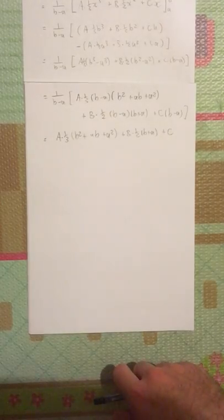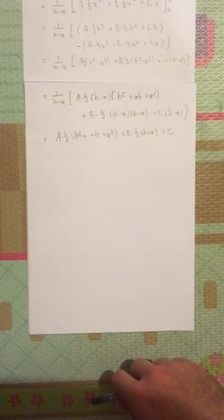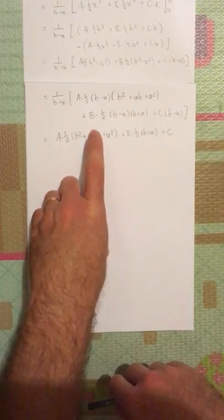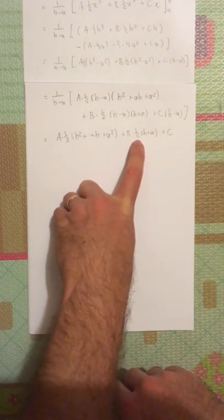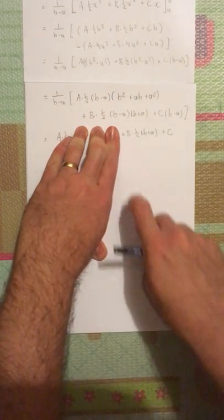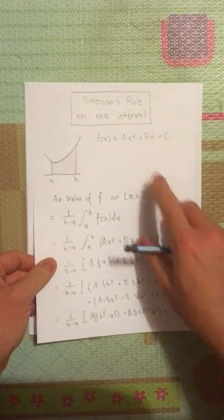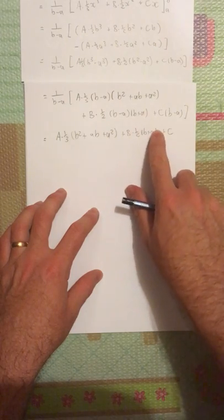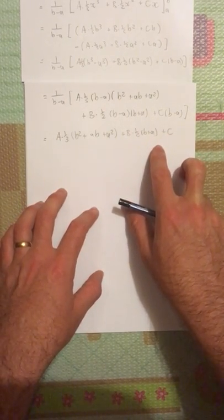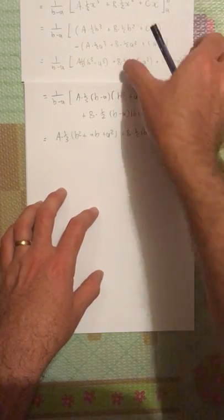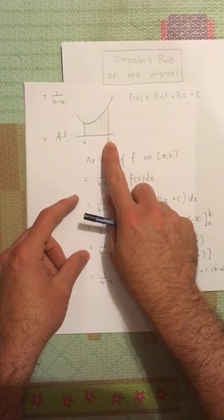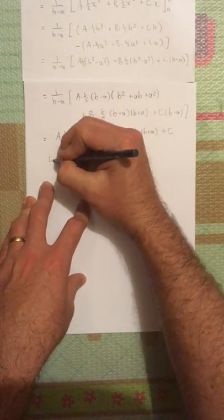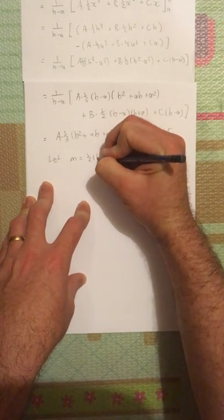I notice that if this were b² + 2ab + a² it would be (b + a)², and the expression b times a half of (b + a) plus c looks like the end of our function evaluated somewhere. That point is half of (b + a), which is the average of a and b — the midpoint. So let m equal half of (b + a). There's a, there's b, and there's m.